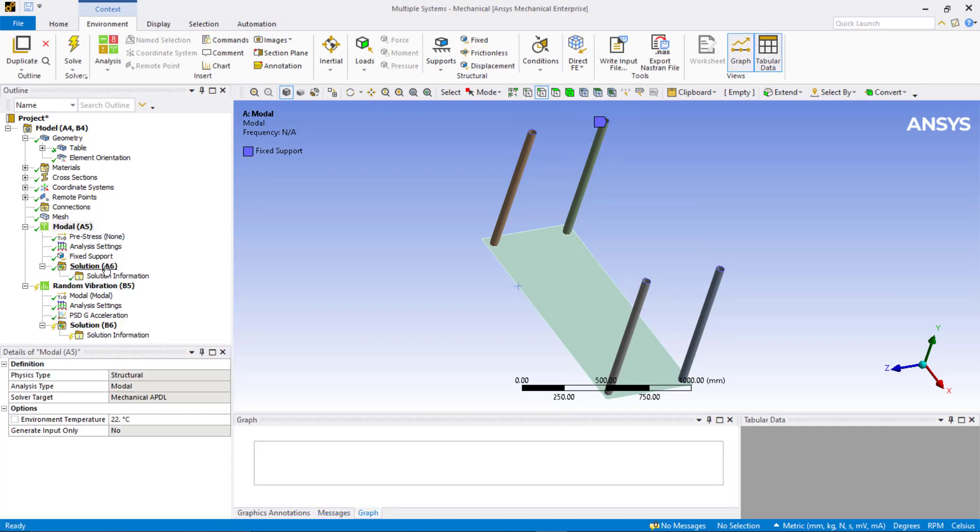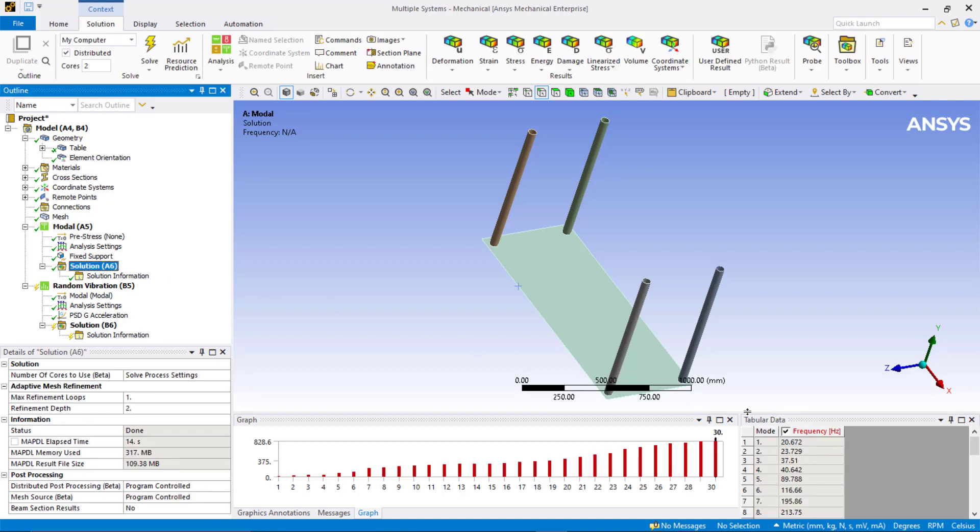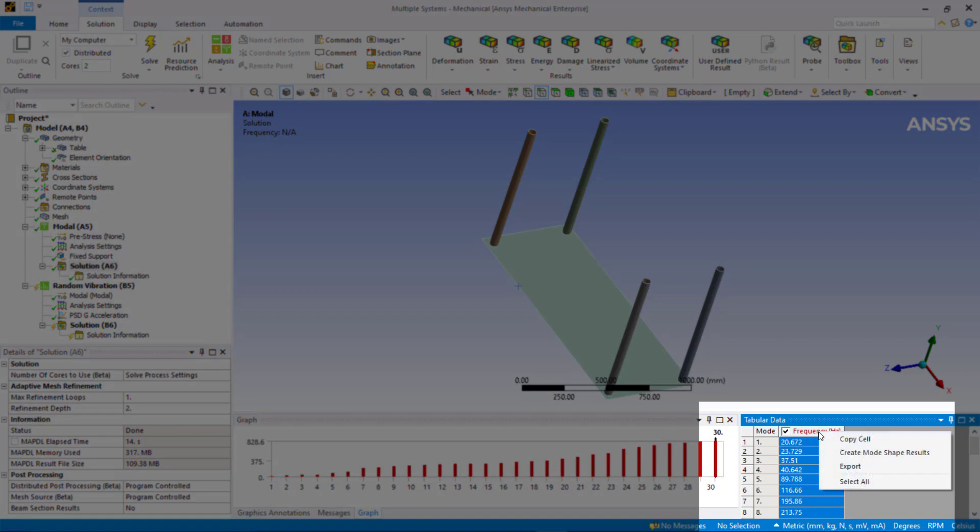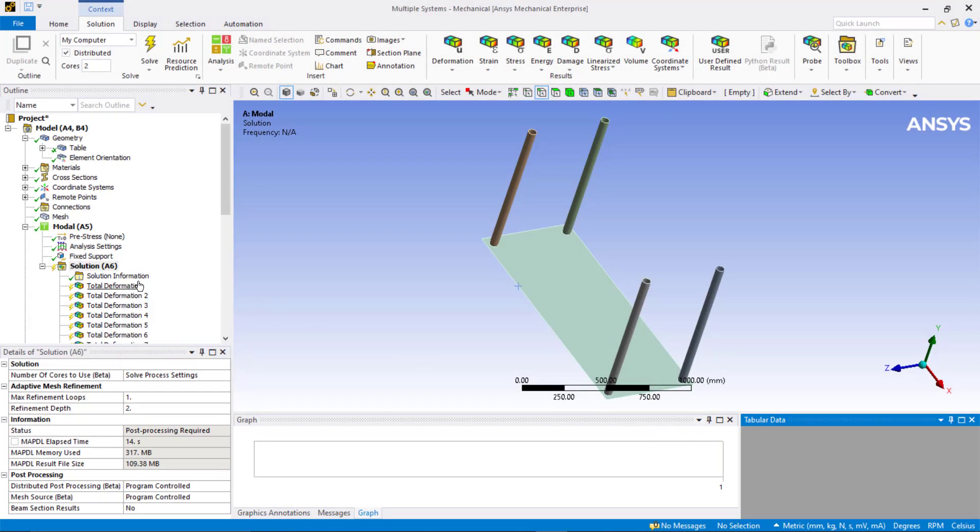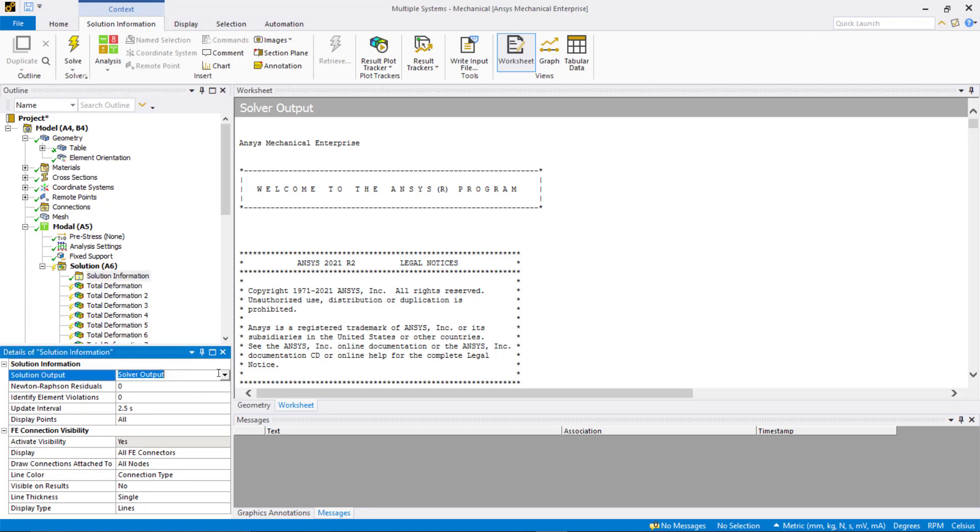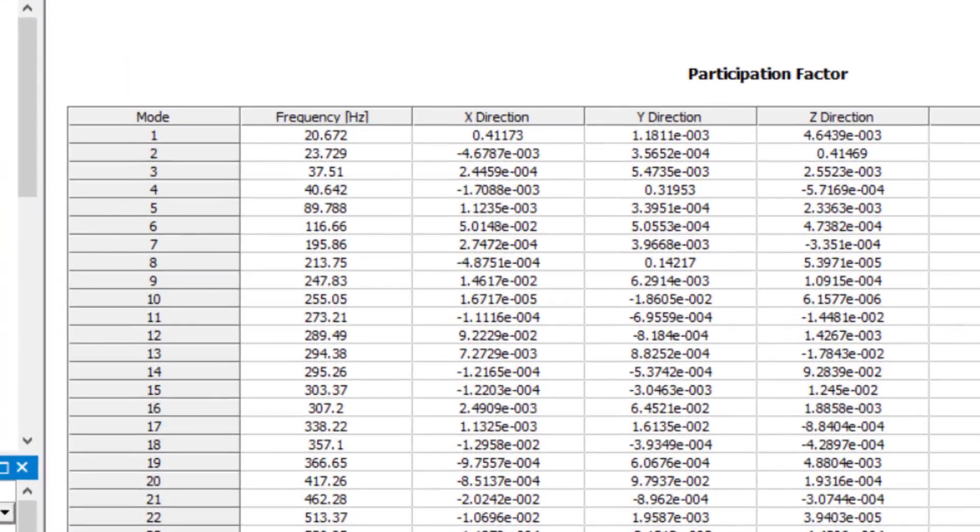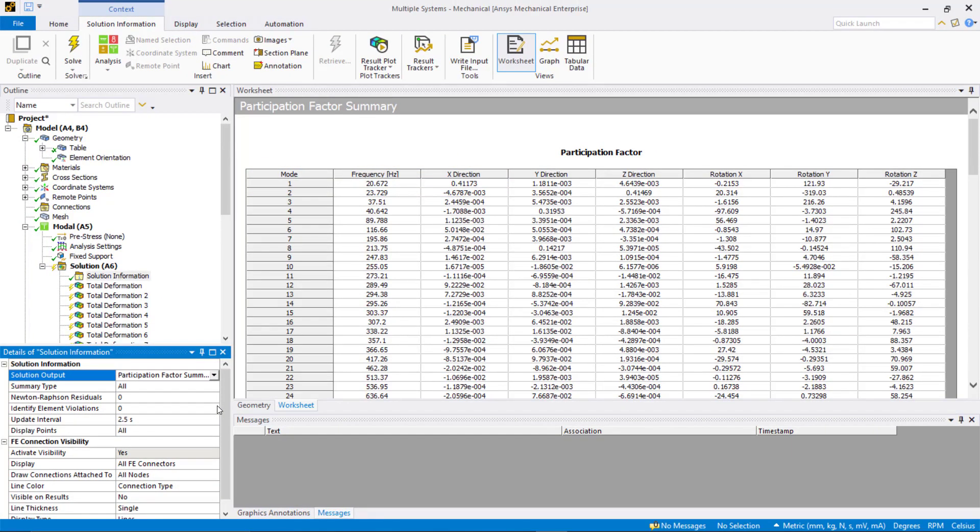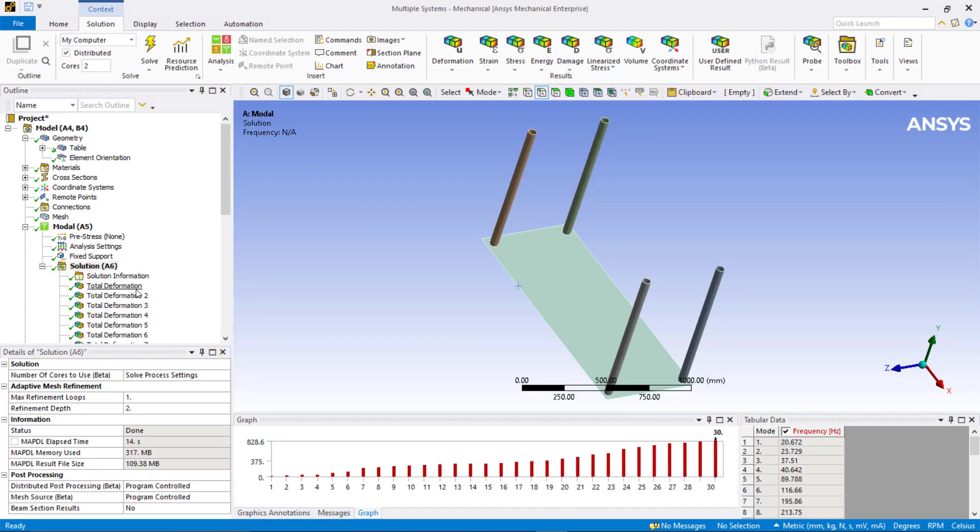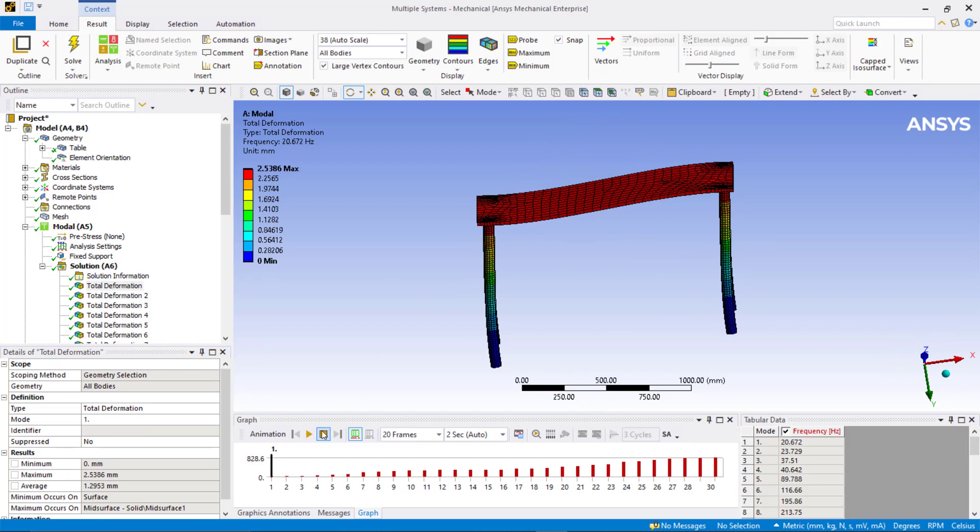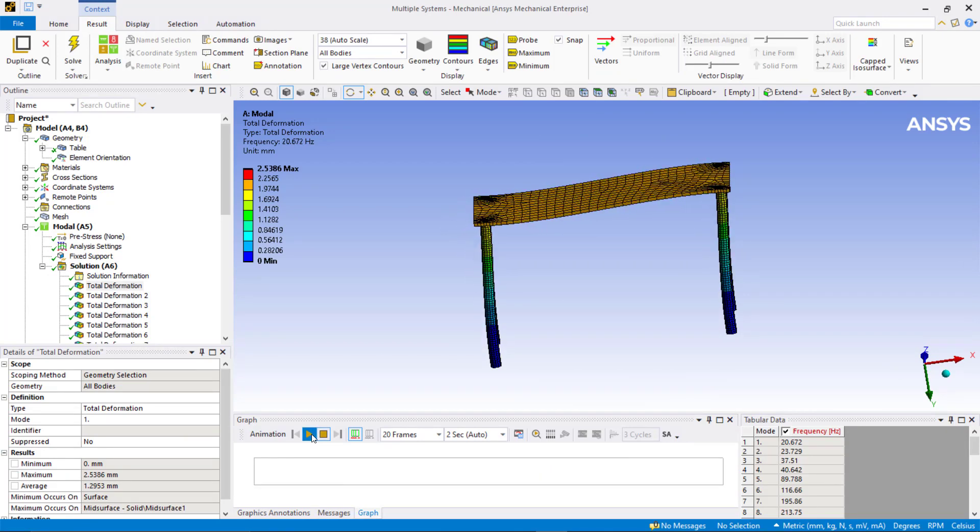Create mode shapes from the table generated after the solution. Highlight all the rows in the table and create mode shapes. 30 total deformations will be added to the tree. Click on solution information and change solution output to participation factor summary. We can see that there is a significant participation factor for mode 1 in x direction. Hence, we should see a high contribution of mode 1 in overall response of the structure. Right-click on the solution and evaluate all results. The total deformation animation shows the deformed shape of mode 1.